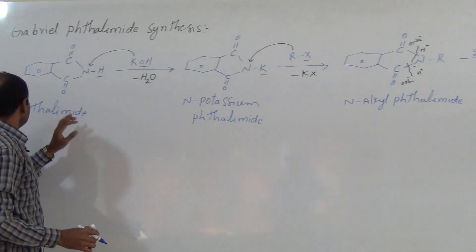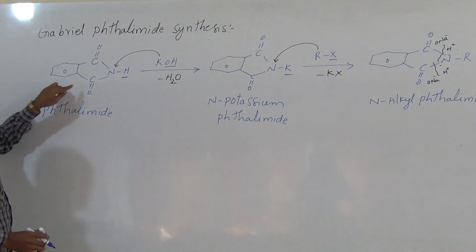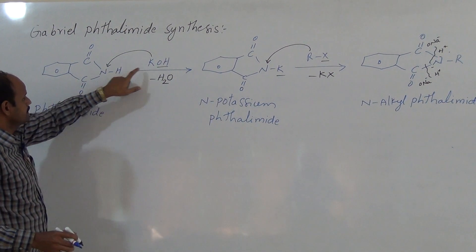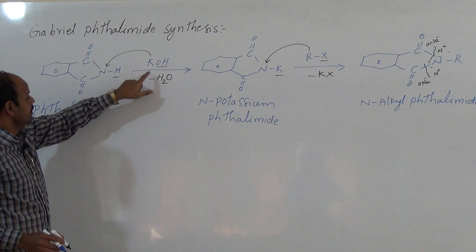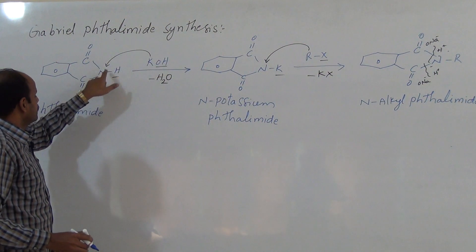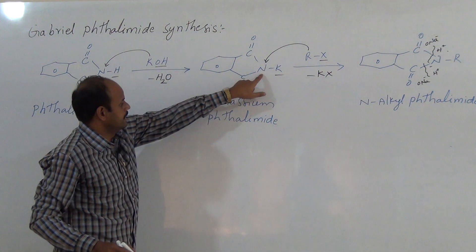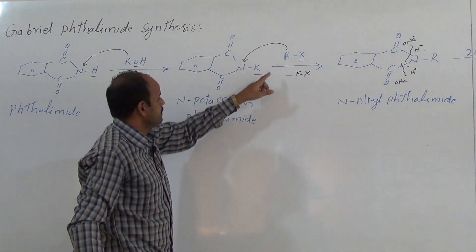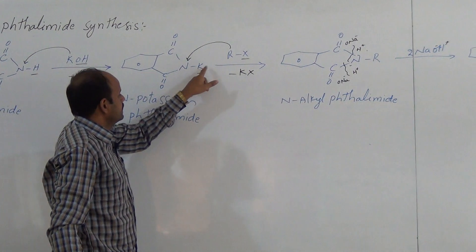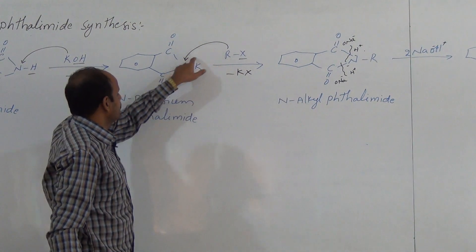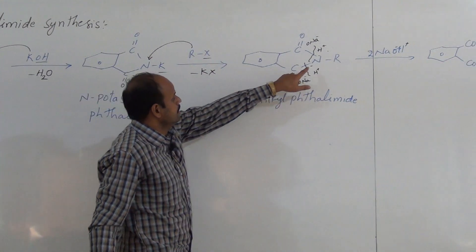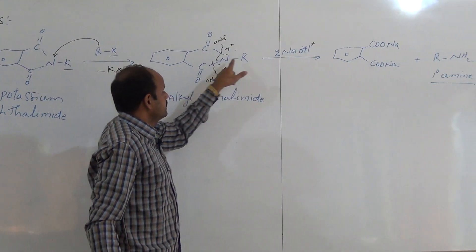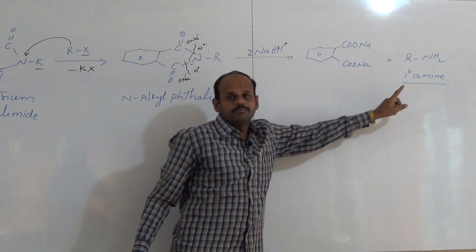This reaction is called Gabriel Phthalimide synthesis. Here phthalimide reacts with potassium hydroxide; after removing H2O, potassium attacks on nitrogen to give N-potassium phthalimide. Again it reacts with alkyl halide, KX is removed, alkyl group attacks on nitrogen to give N-alkyl phthalimide, which reacts with NaOH to give the primary amine.